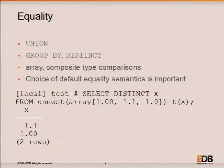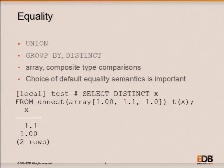If you have a data type where values can be distinguishable yet equal, you need to be very careful about where you draw that line, because this affects all kinds of other parts of the system. It's going to affect GROUP BY, UNION, and all parts of the system that refer to your default Btree operator class.